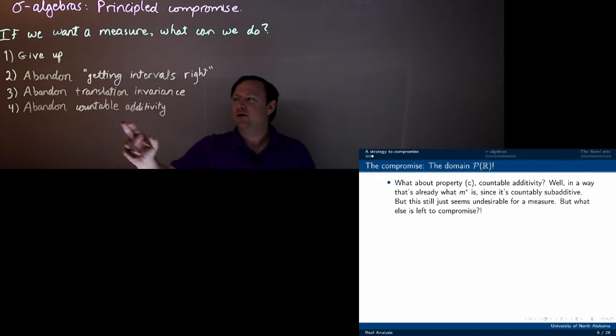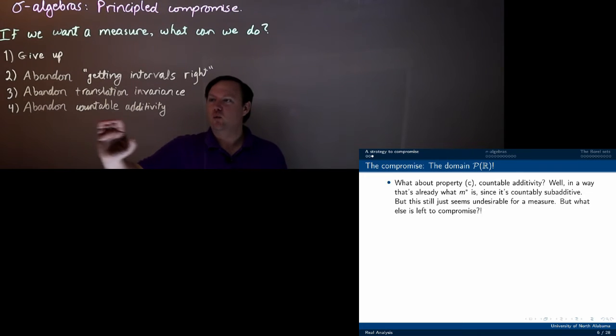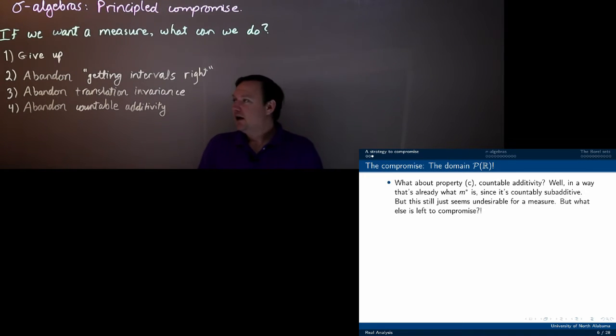We already, M star already fails countable additivity. So abandoning that, right? Like we're going through this struggle precisely because we wouldn't want to do this. So what's left? It makes it look like there is nothing left.